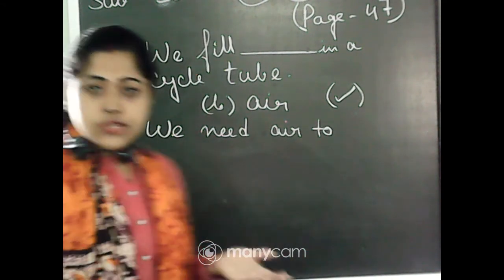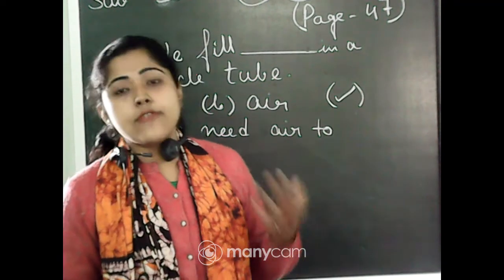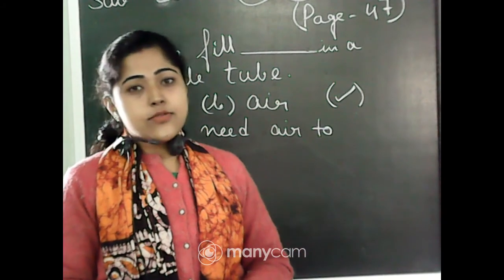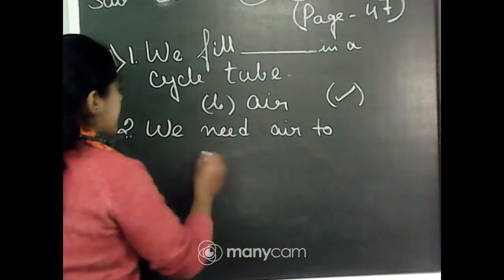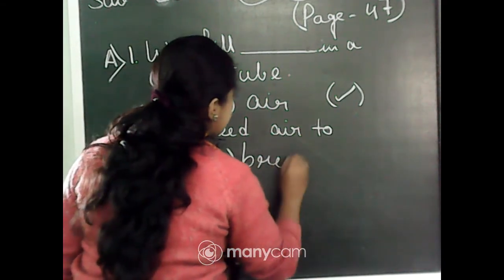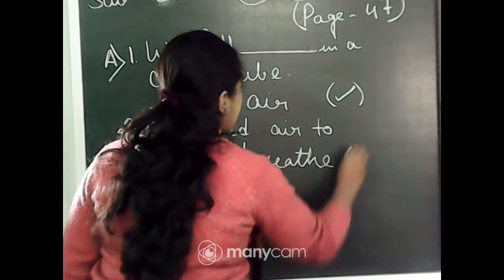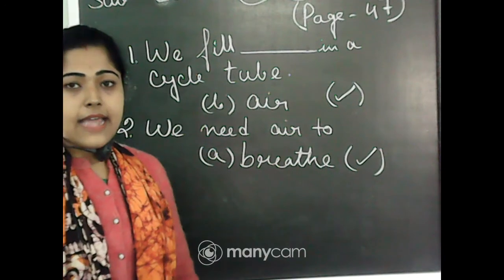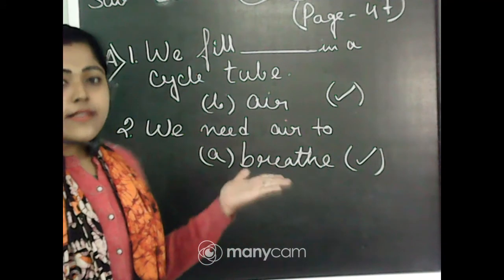Next is question number 2: 'We need air to dash.' Here also three options — Option A: breathe, Option B: wear, Option C: wash. Why do we need air? We need air to breathe, to take breath. So Option A is the correct answer — breathe. We need air to breathe.